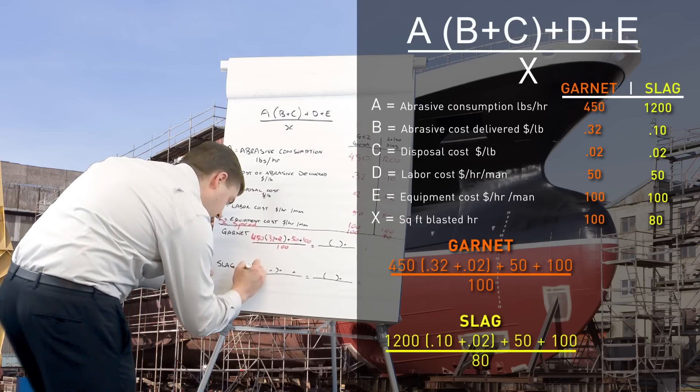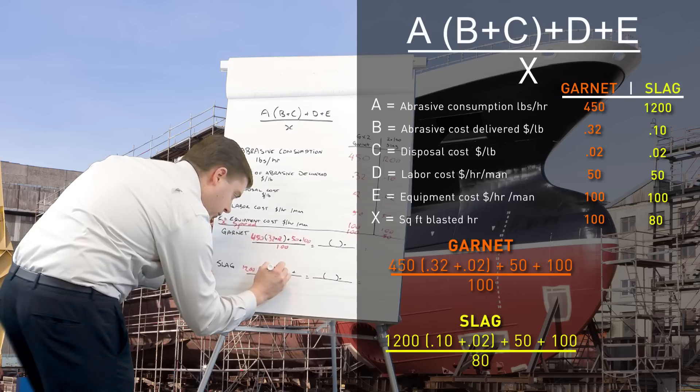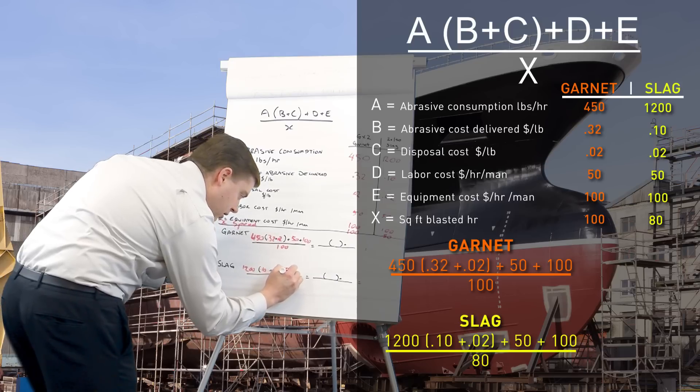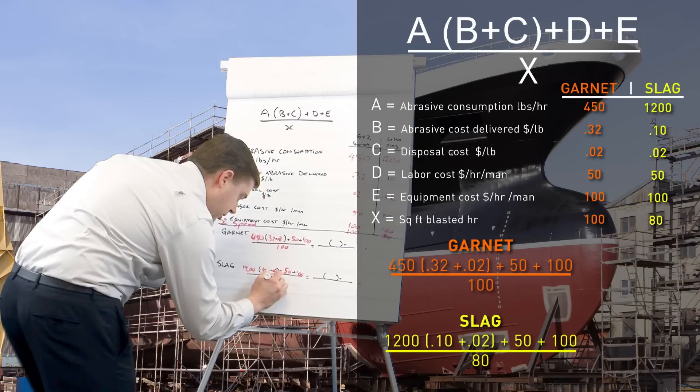Slag, we had 1200 pounds an hour. Slag, we had 1200 pounds an hour times by our 10 cents delivered and our 2 cents disposal plus 50 plus 100 and our 80 square foot an hour.